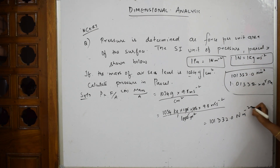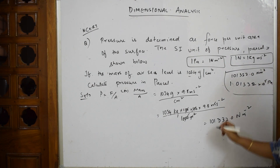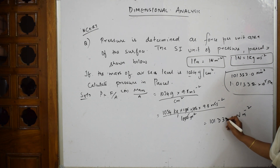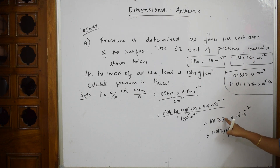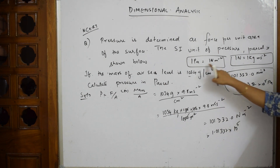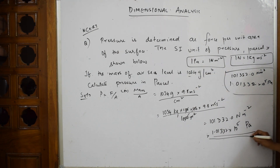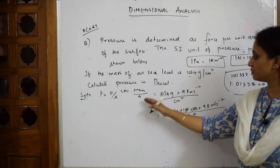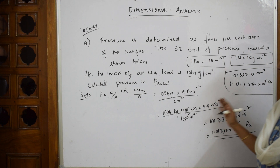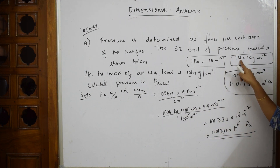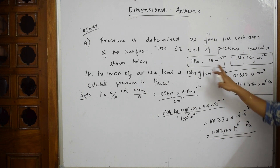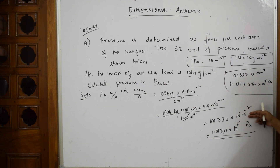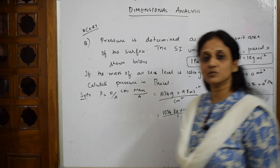Since 1 kg·m·s⁻² = 1 Newton, the units become Newton/m². Shifting the decimal 5 places: 1.01332 × 10⁵ N/m². Since 1 Newton/m² = 1 Pascal, the final answer is 1.01332 × 10⁵ Pascal. The steps: convert grams to kilograms, cancel common units, then recognize Newton per meter square equals Pascal.